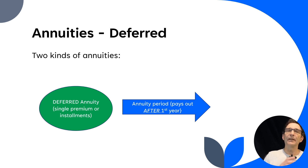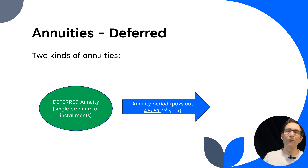And an immediate annuity is when the payout is occurring before that first year.